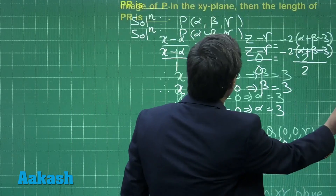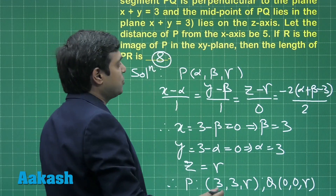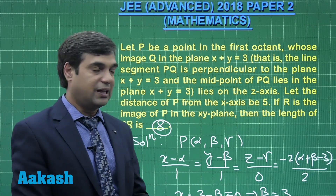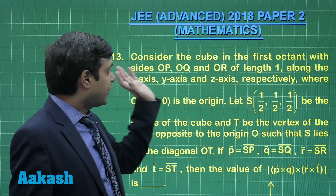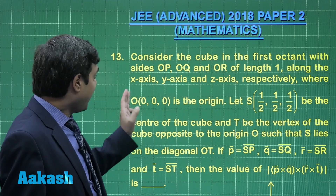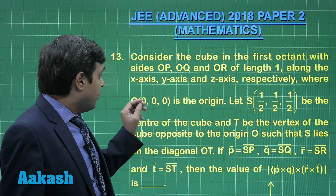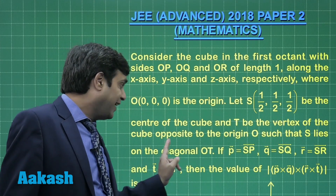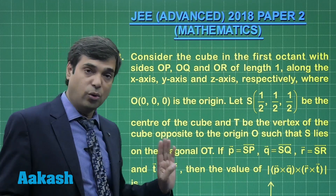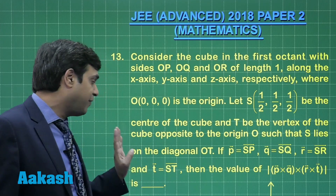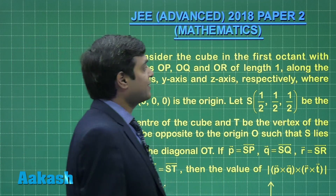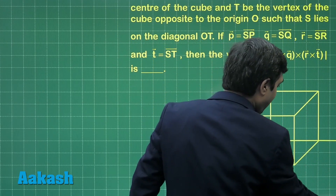The required result for question 12 comes out as 8. The length PR is 8. Moving to question number 13: consider the cube in the first octant with sides OP, OQ, and OR of length 1 unit each along the x-axis, y-axis, and z-axis respectively. S = (½, ½, ½) is the center of the cube, and T is the vertex opposite to the origin O such that S lies on the diagonal OT. We have to find |p⃗ × q⃗ × r⃗ × t⃗|. Let us start by considering a cube whose sides are along the coordinate axes.